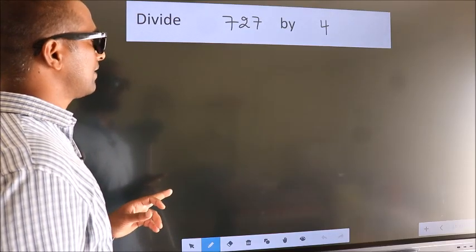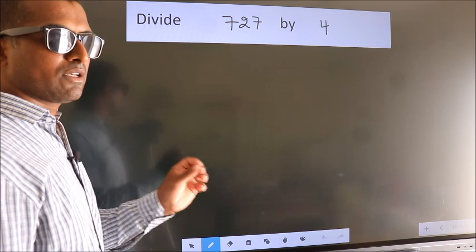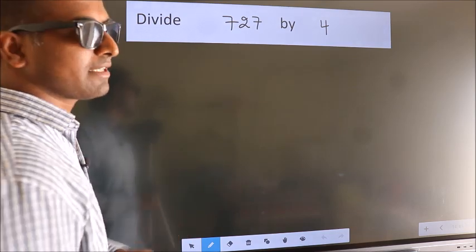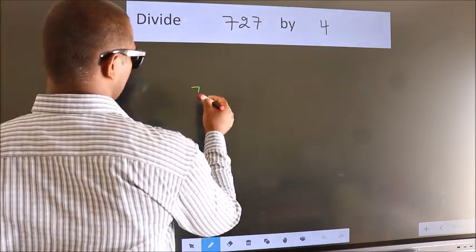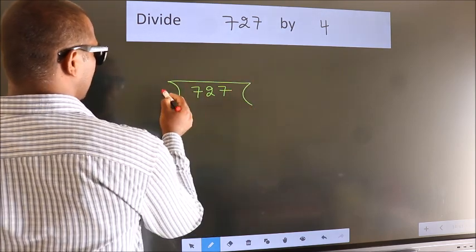Divide 727 by 4. To do this division, we should frame it in this way. 727 here, 4 here.